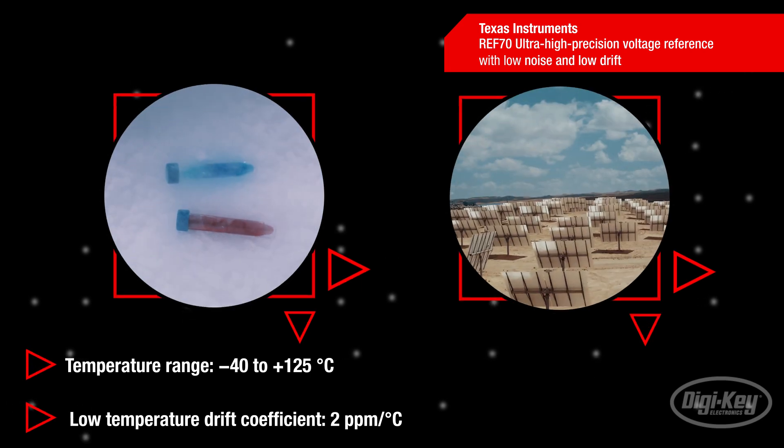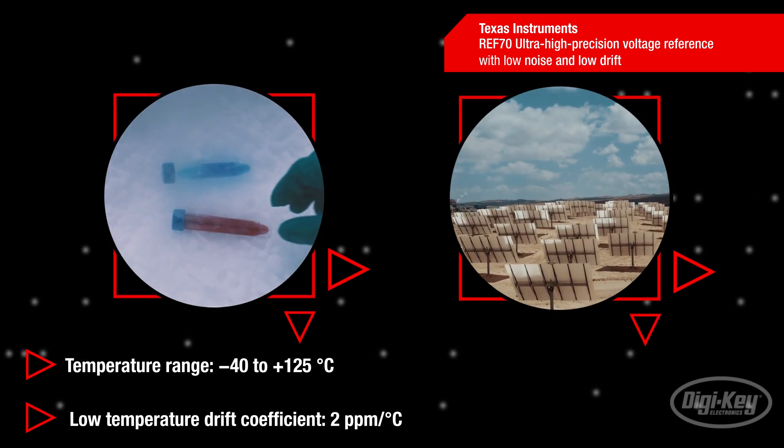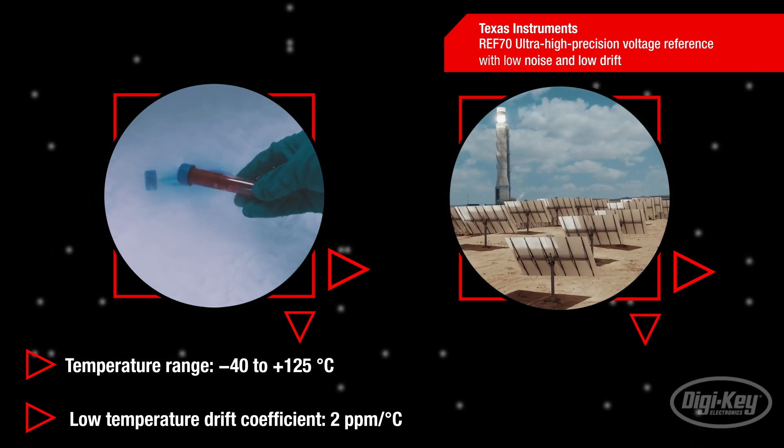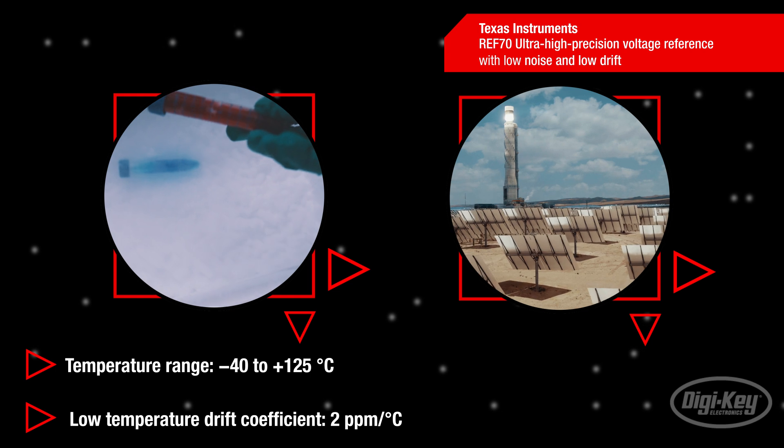With an operating temperature range of negative 40 to positive 125 degrees Celsius, these voltage references work in a wide selection of industrial and scientific settings.